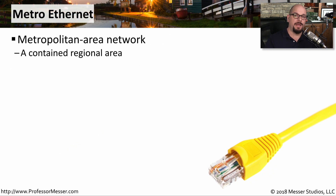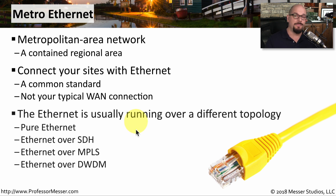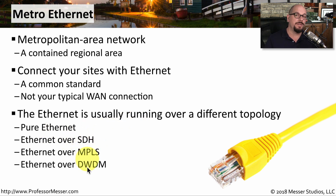If you need to connect locations within a single city, you might consider using metropolitan area networks, such as Metro Ethernet. These connections cover a relatively close geographical area. Instead of connecting a T1 or T3 line, the provider can simply give you an Ethernet connection on both ends, allowing you to connect to your normal Ethernet equipment. Inside the provider's network, the transport is probably not Ethernet — they may be running Ethernet over SDH, MPLS, or even Ethernet over DWDM.